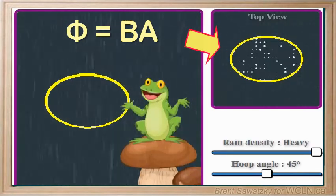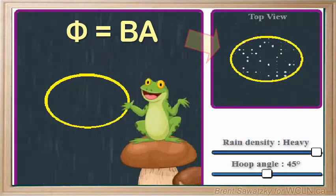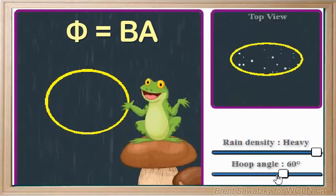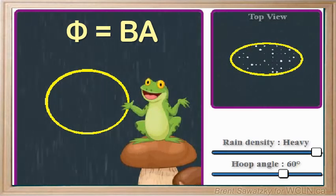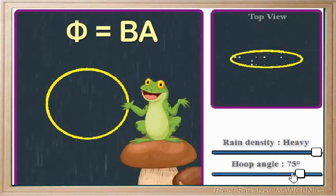If we change the angle a bit more, the shadow is even less than the original circle, and the effective area drops down more. Let's adjust the angle again. Another increase in the angle from the horizontal means that our effective area has dropped again.